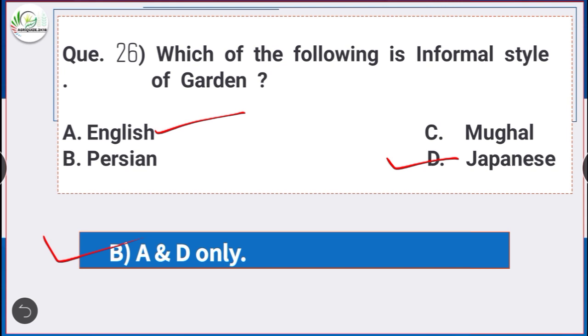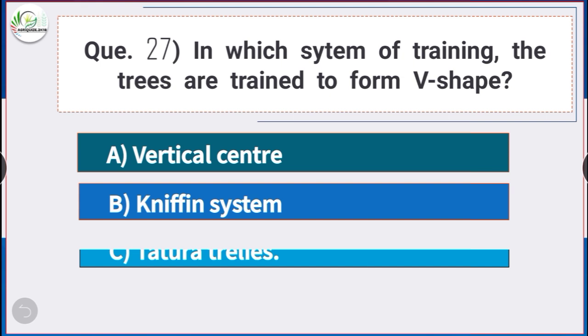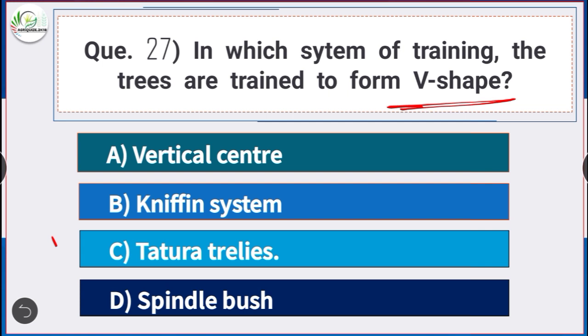Question number 27: In which training system of grapes are the trees trained to form a V-shape? Answer is option C — Tatura trellis.